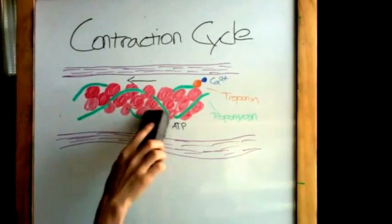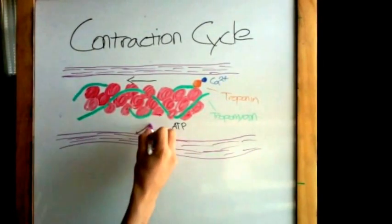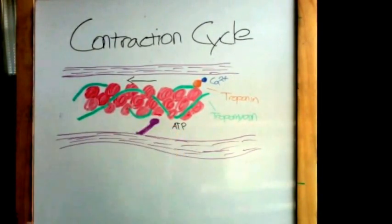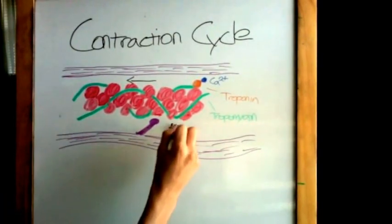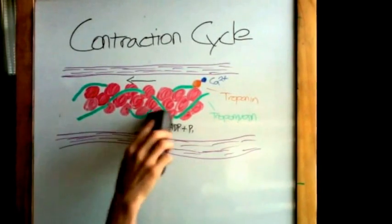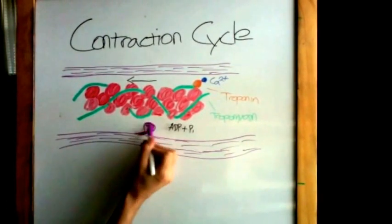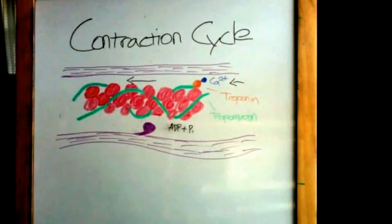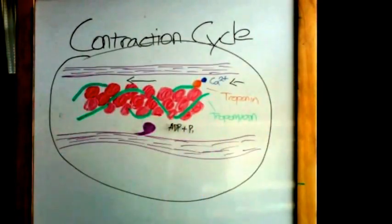During the power stroke, myosin releases ADP and phosphate. The bond between actin and myosin head is broken when ATP binds to the myosin head. The ATP is broken down to ADP and phosphate, releasing energy, which is stored in the myosin head and will be used later for movement. If calcium ions are still present, the entire sequence is repeated.